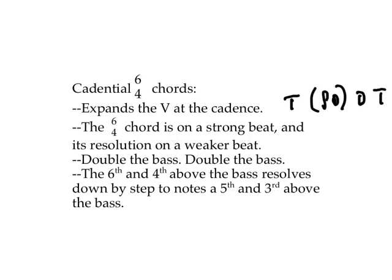The 6-4 chord happens on a strong beat. It could be a downbeat, or it could be beat 3 of a 4-4 measure. The resolution is on the weaker beat. We always double the bass on every 6-4 chord. And the intervals that are a sixth and a fourth above the bass will go down by step, and when they do that, we'll get notes that are a fifth and a third above the bass.